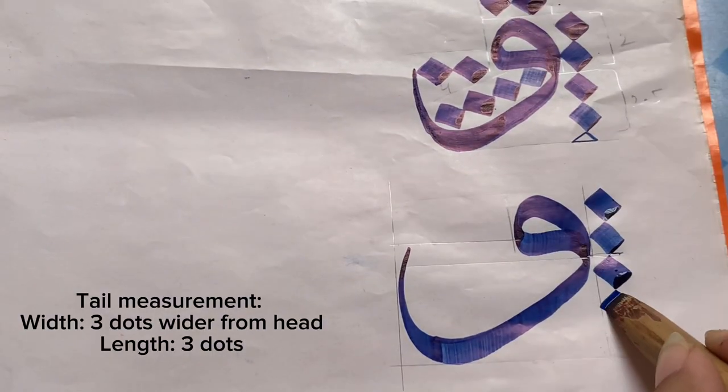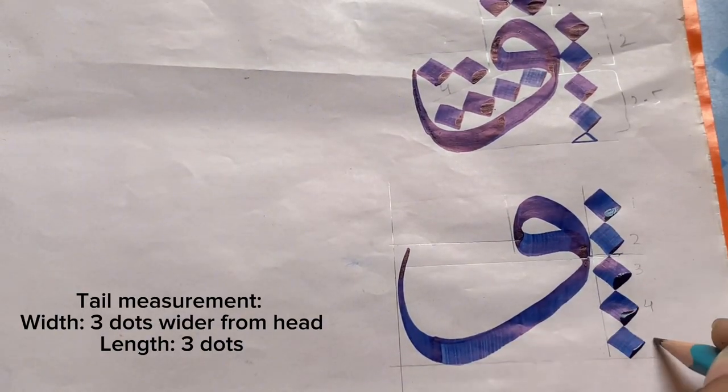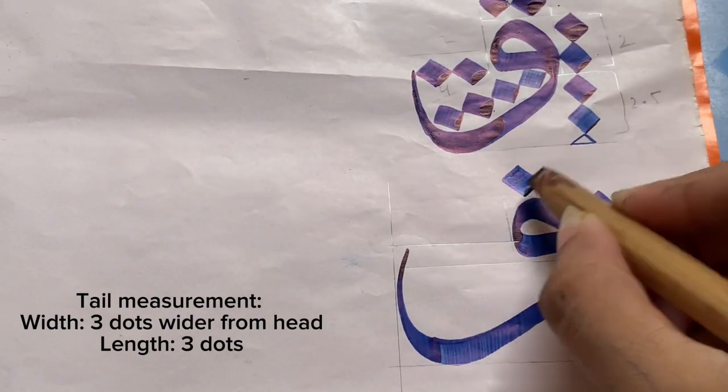Tail measurement: width three dots wider from head, length three dots.